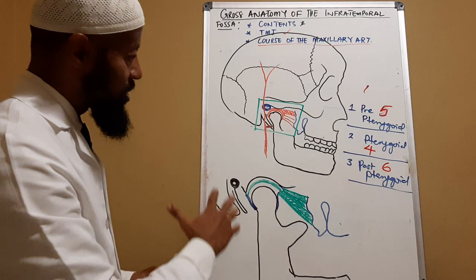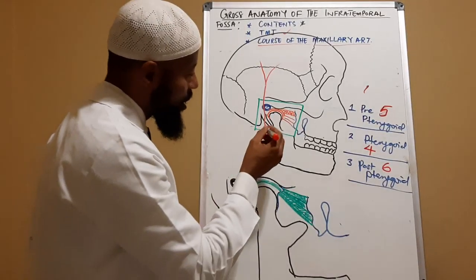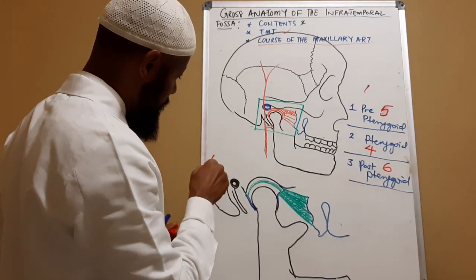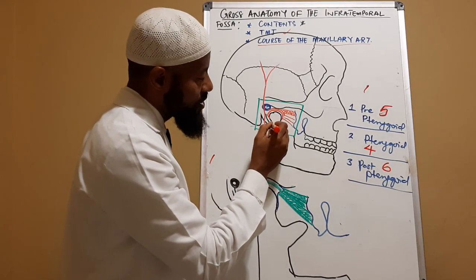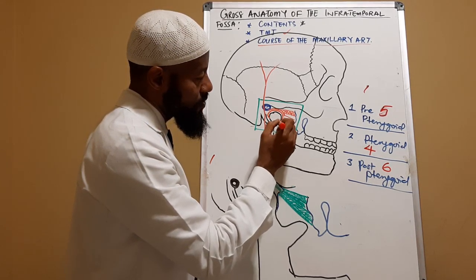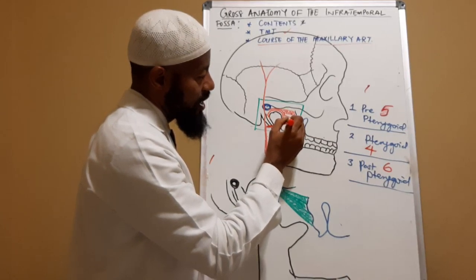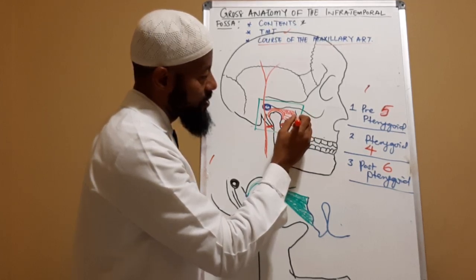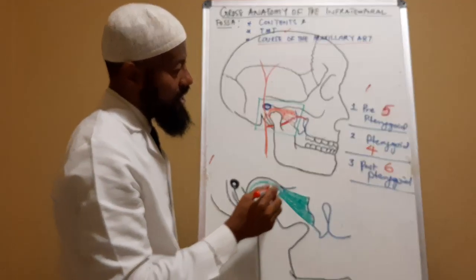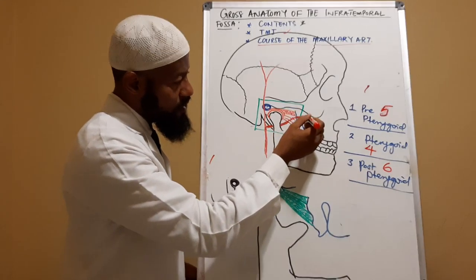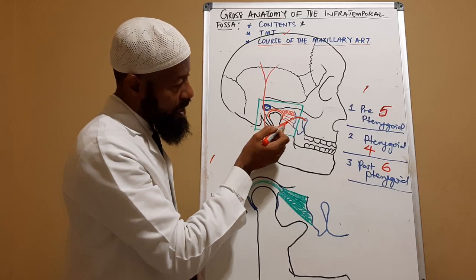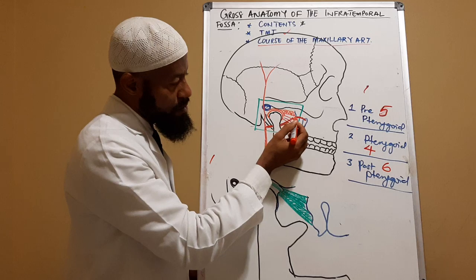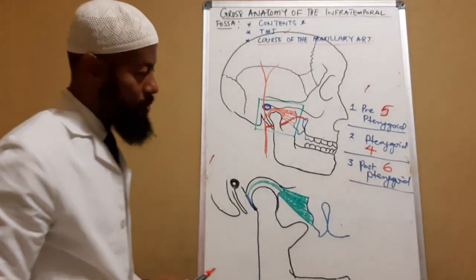Tracing the artery — it runs deep to the neck of the mandible and continues all the way around. This is the pre-pterygoid portion, because it is before the pterygoid. This is the pterygoid portion, and this is the post-pterygoid portion.